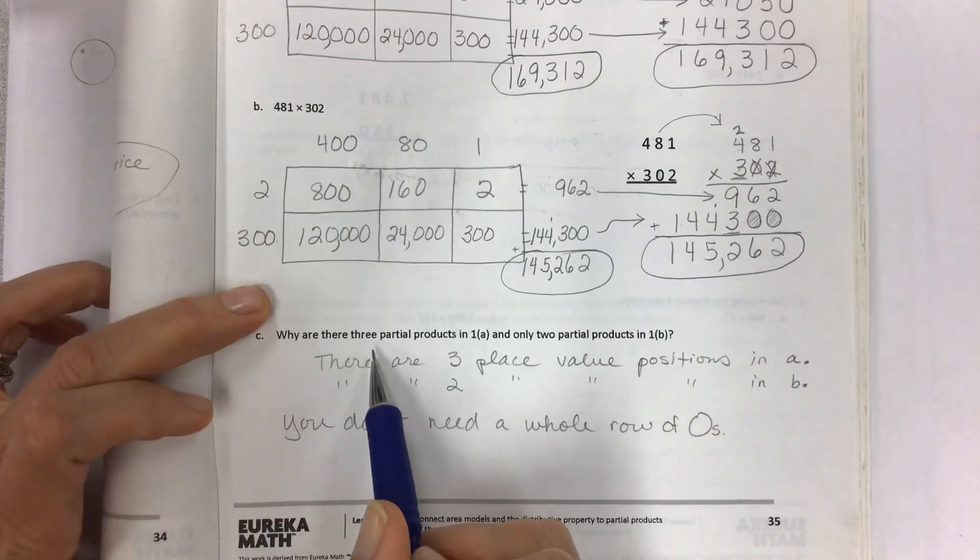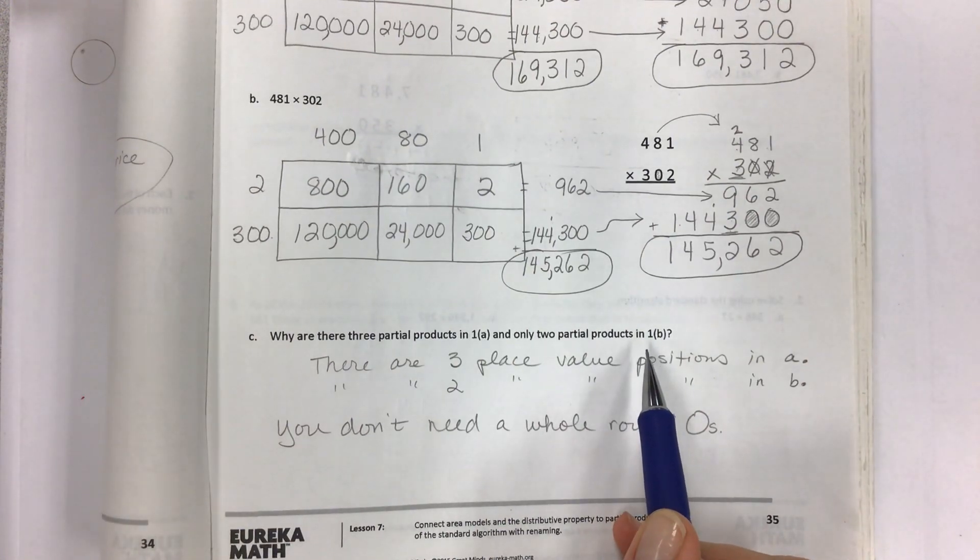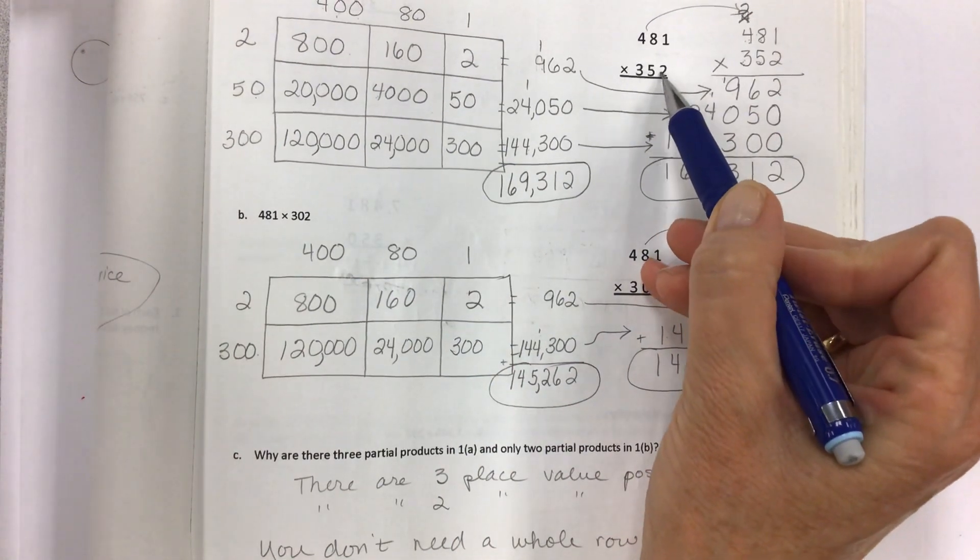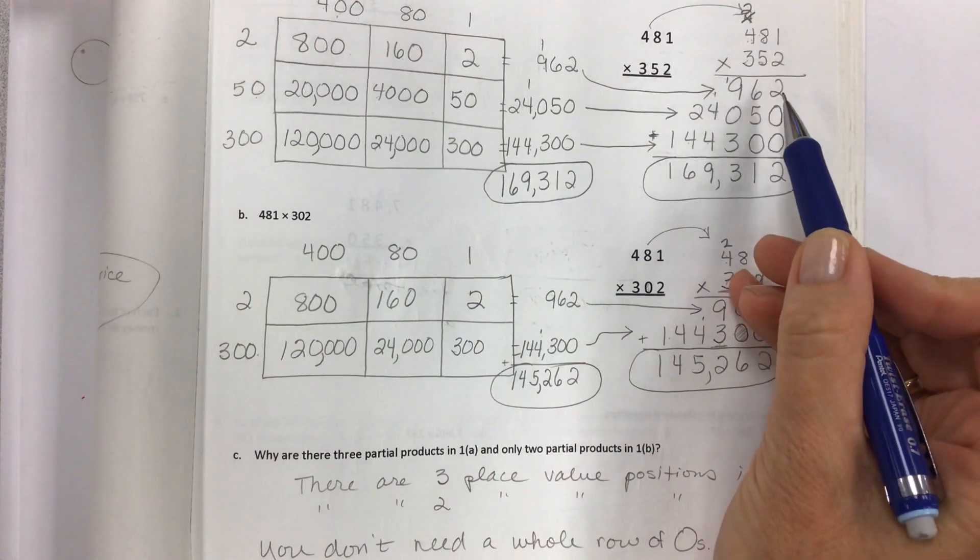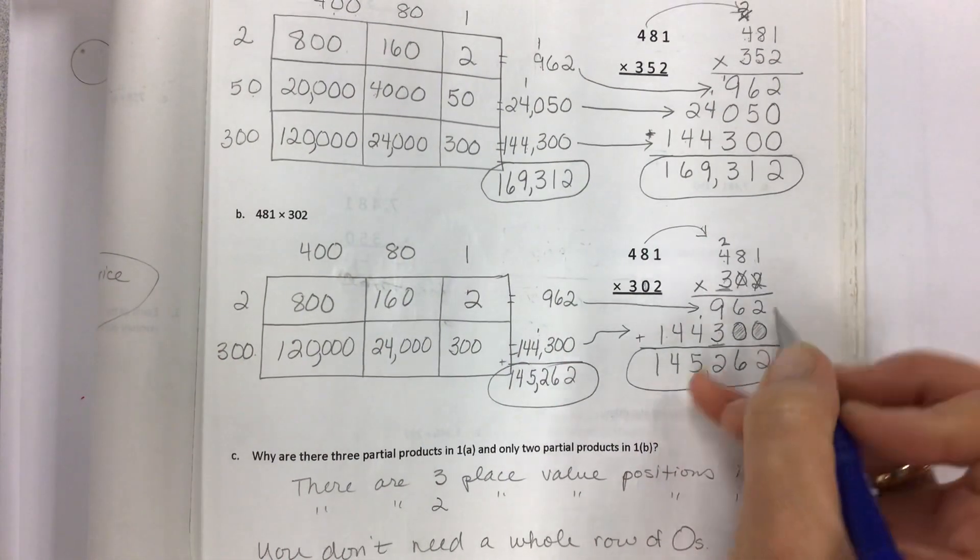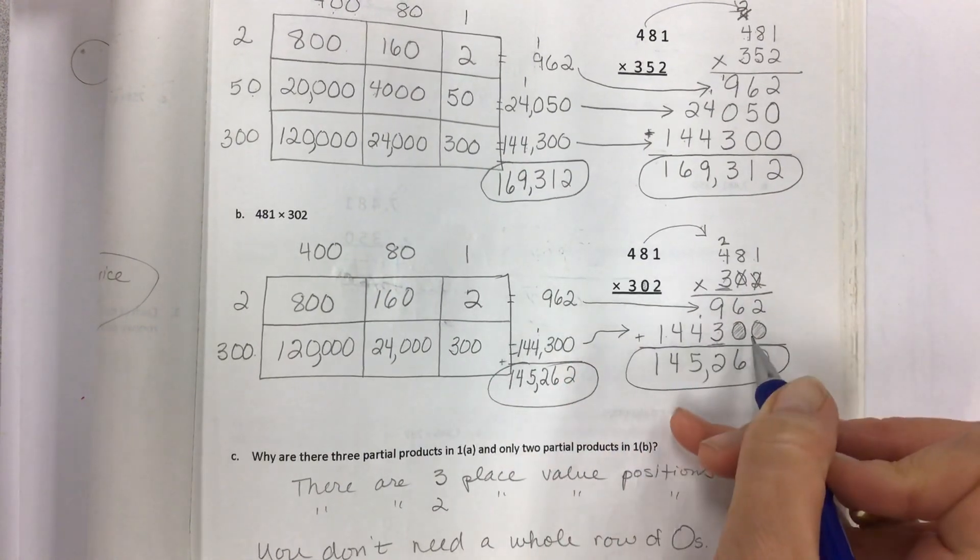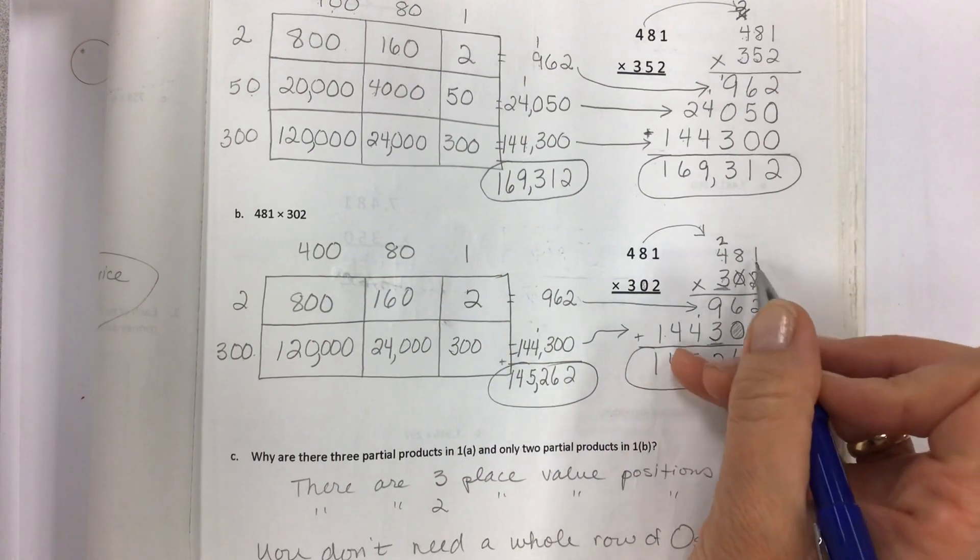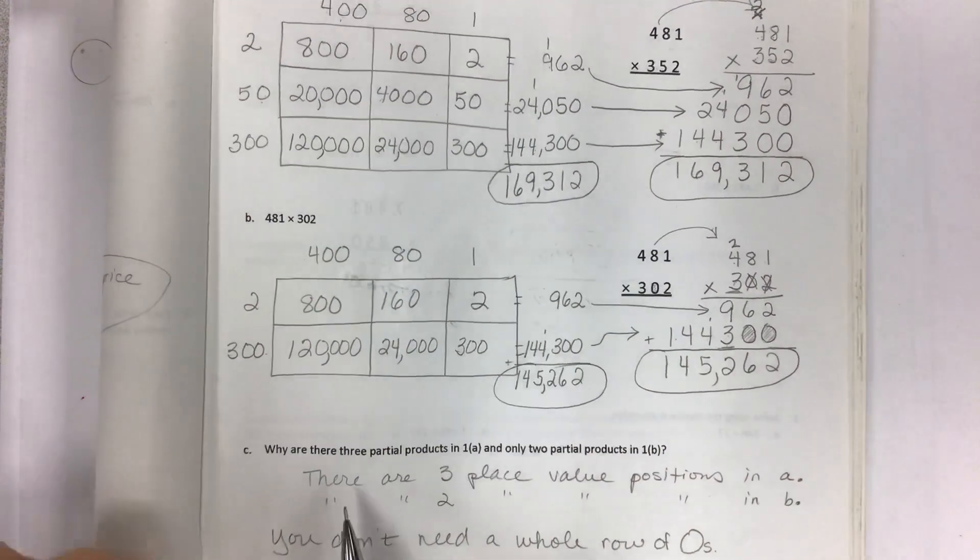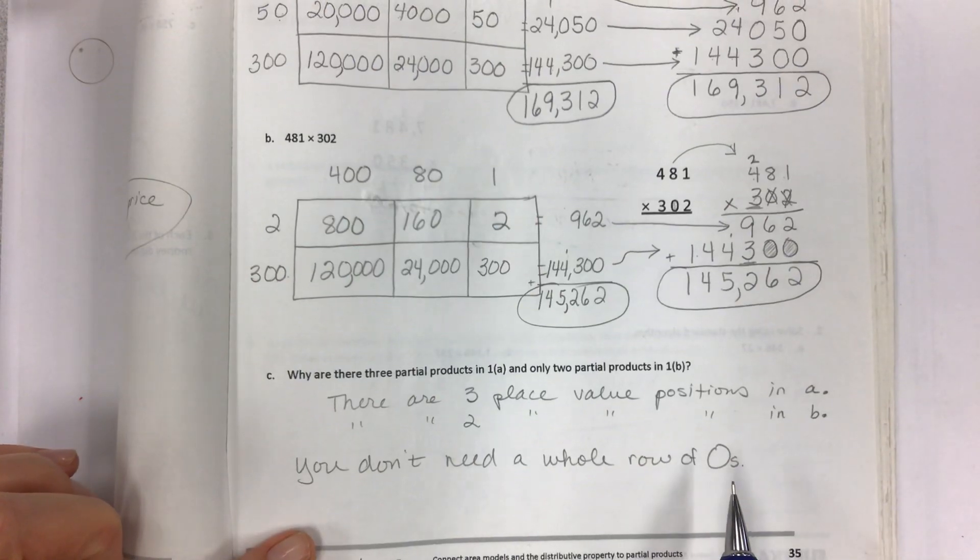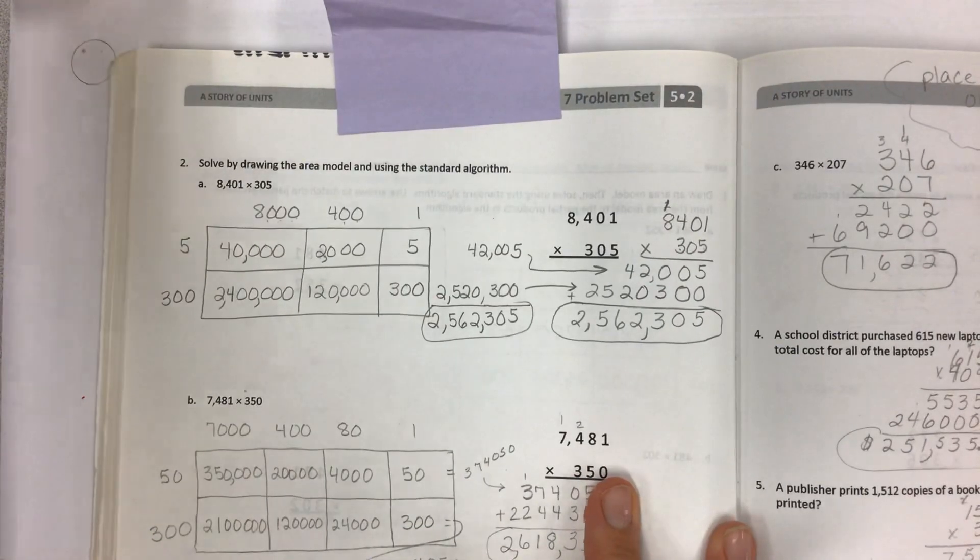At the bottom why are there three partial products in 1a and only two partial products in 1b? And this just goes right to what I was talking about because each of these digits in the second factor has value. Okay this is the two ones. This is the five tens partial product and this is the three hundreds partial product. In this one I'm telling you you don't have to have a row of zeros so you just eliminate it. This is the ones, the two ones times 481, and this is the partial product for three hundreds times 481 and that goes here. So you're explaining it here in C. You don't need to have a whole row of zeros and that's really the bottom line is you just don't need it. Can you put it if you want to? Sure. But you don't need it. All right next one.